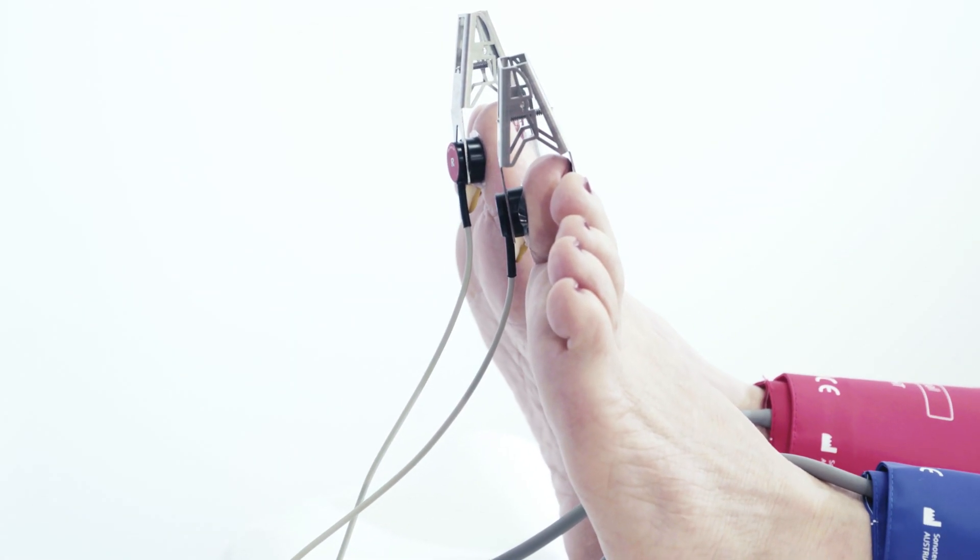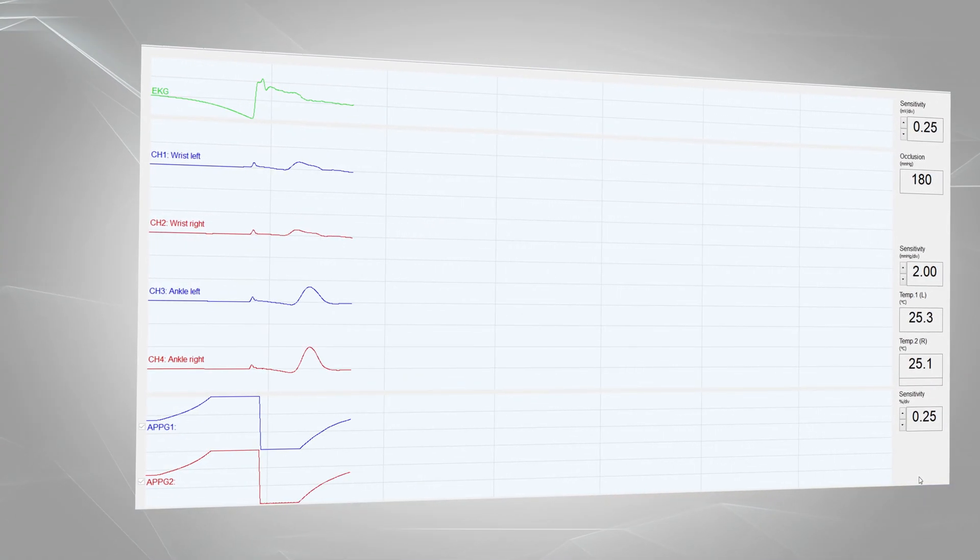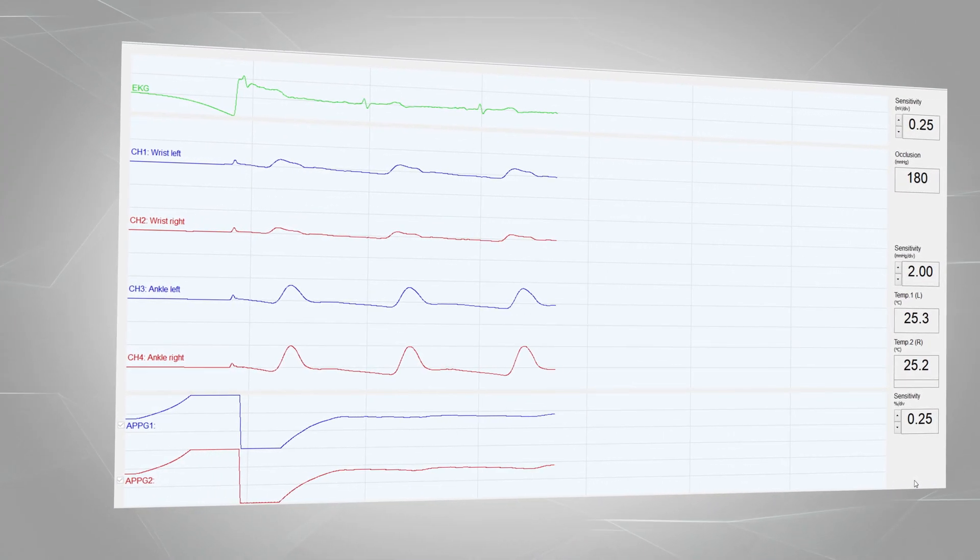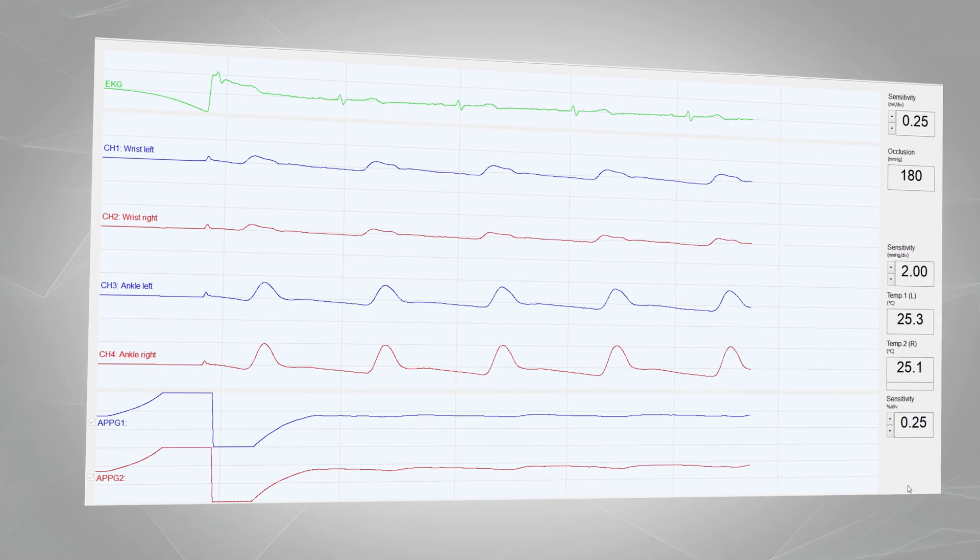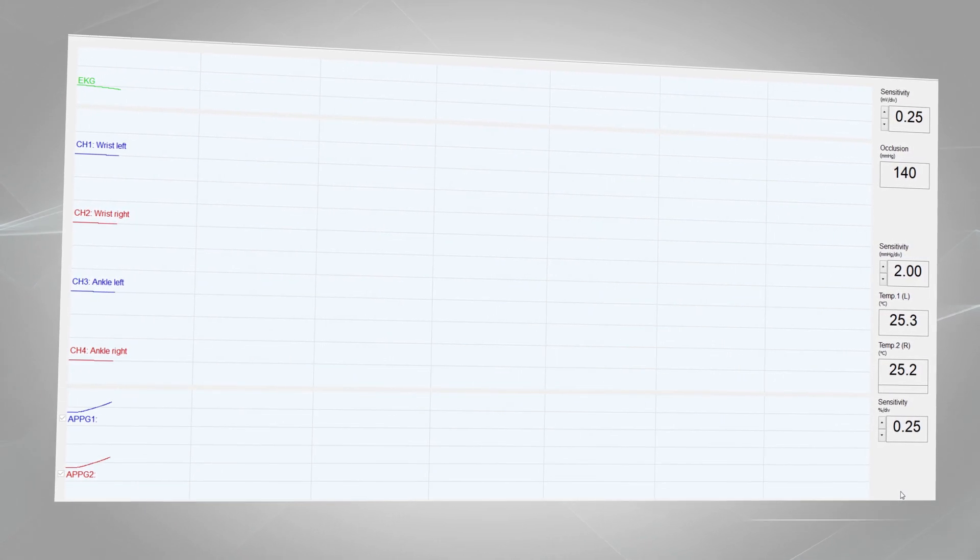the cuff pressure is increased by the measuring program to 180 mmHg and gradually reduced in steps of 10 mmHg.